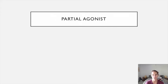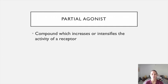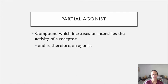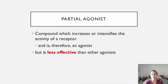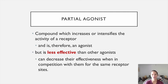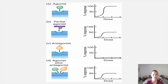That brings us to partial agonists, which are sort of strange. They are both stimulating and inhibitory. A partial agonist is a compound which can increase or intensify the activity at a receptor — in that case, it's an agonist — but not as much as a pure agonist would stimulate it. So it's like a weak agonist, but as it's sitting there, it's also blocking the receptor so the true agonist can't get in. In that case, it is like an antagonist. Sometimes in drug reference books, these are referred to as agonist-slash-antagonists.